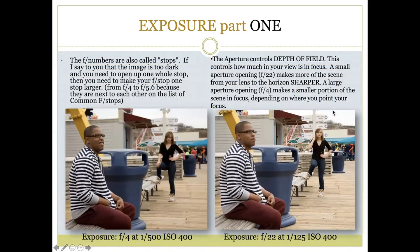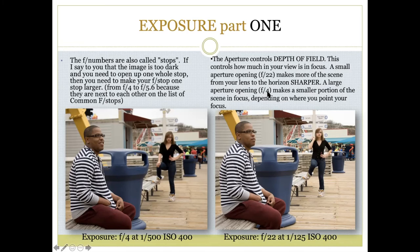The aperture also controls something very important called depth of field — this controls how much in your view is in focus, specifically how much in front of and behind your point of focus is actually in focus. A small aperture opening like f22 makes more of the scene from your lens to the horizon sharper. A large aperture opening like f4 makes a smaller portion of the scene in focus depending on where you point your focus.